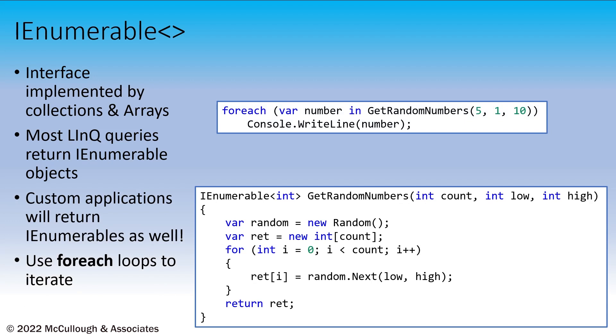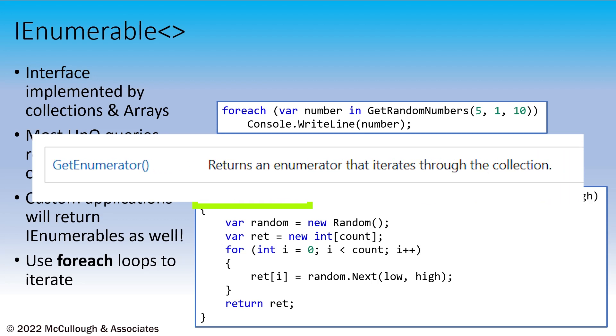In this example, I have a method called GetRandomNumbers that returns an array containing a bunch of random numbers. This method first allocates the array, and then loops through, creating random numbers to populate the elements in the array, and then returns the array. We are returning the array as an IEnumerable, so only methods exposed by that interface can be used by the client programmer.